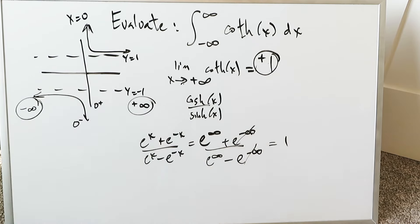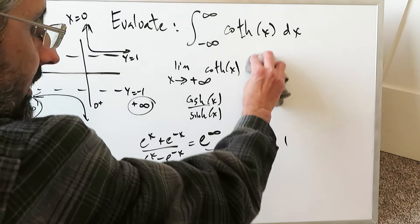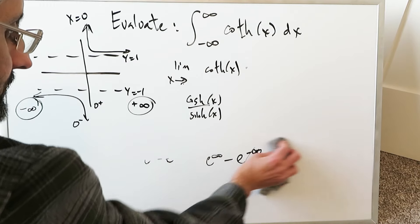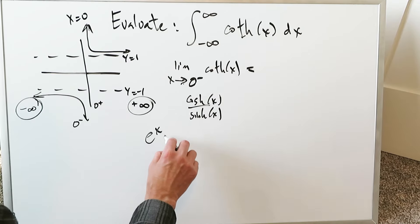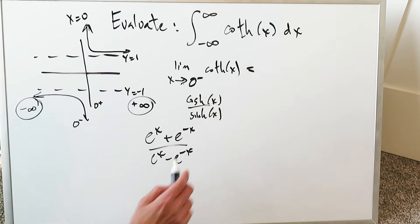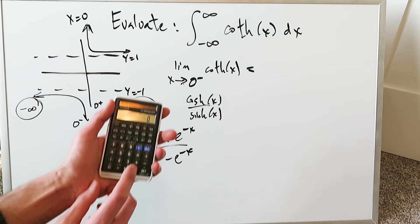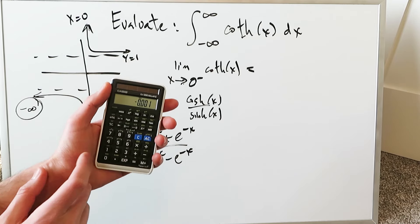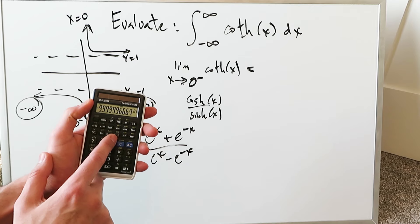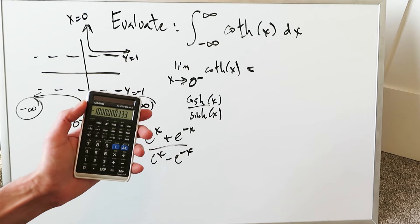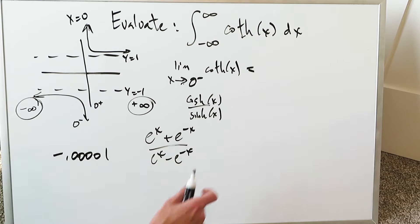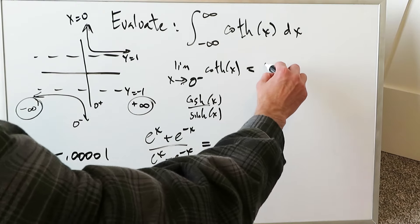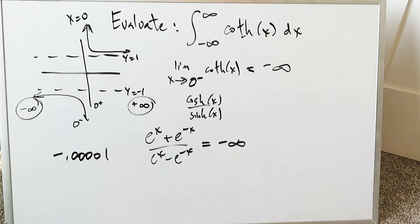The limits at 0 from the left and from the right will not exist. For the limit as x approaches 0 from the left, looking at (e^x + e^{-x}) / (e^x - e^{-x}), plug in a small negative value like −0.001 on the calculator: take hyperbolic tangent then the reciprocal, getting −1000. As values get closer to 0 from the left, you approach minus infinity, as seen on the graph.